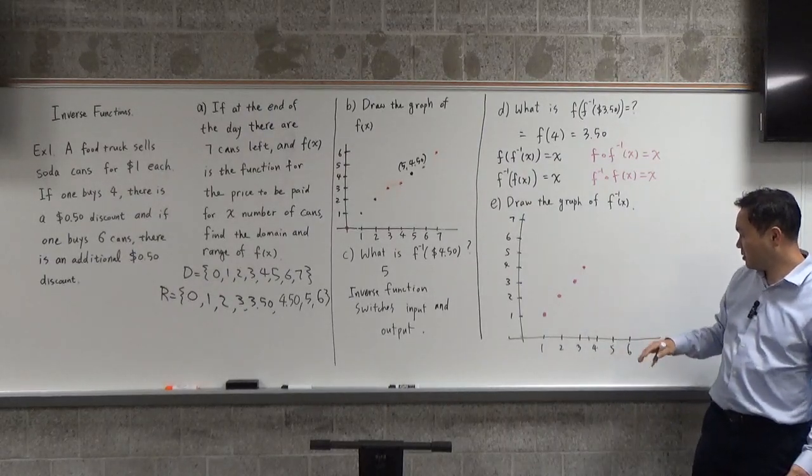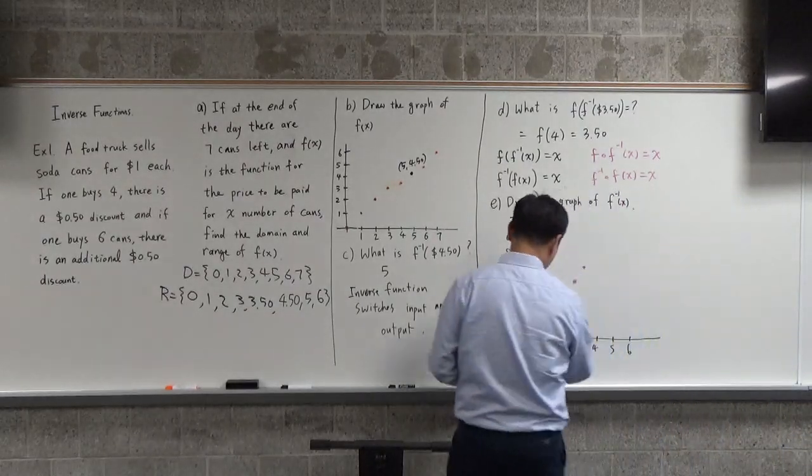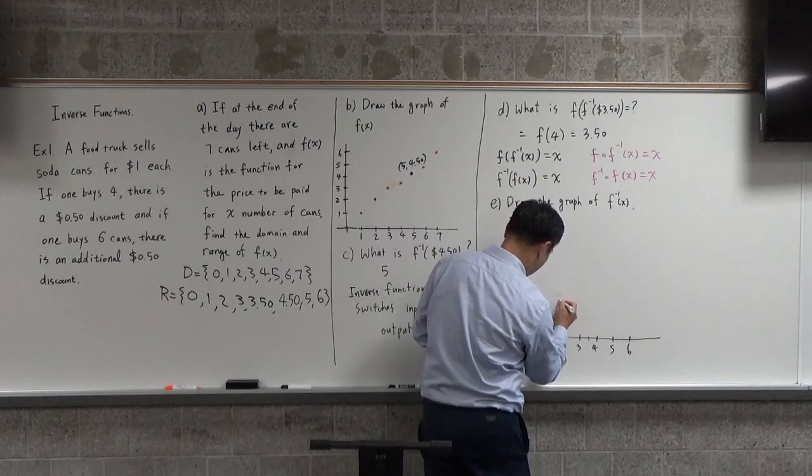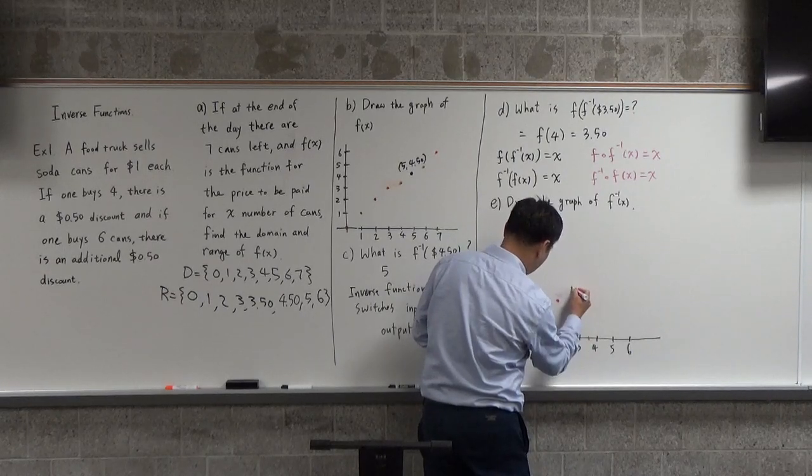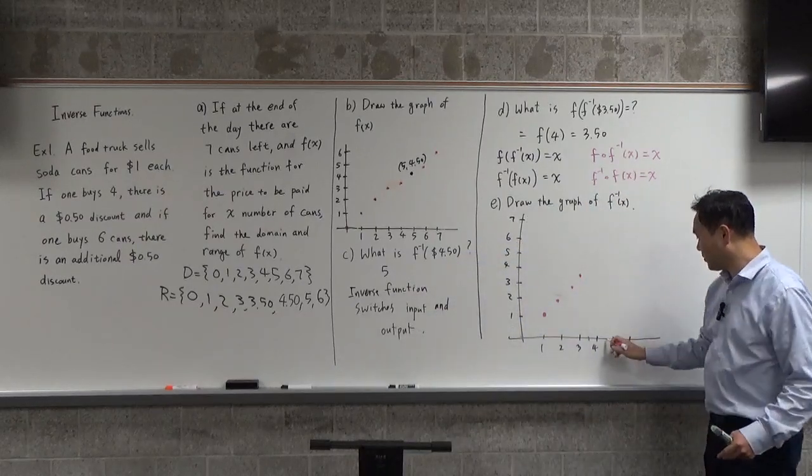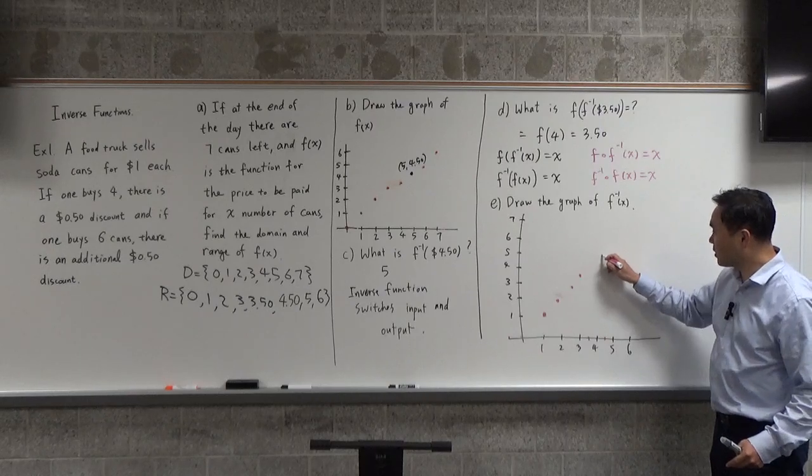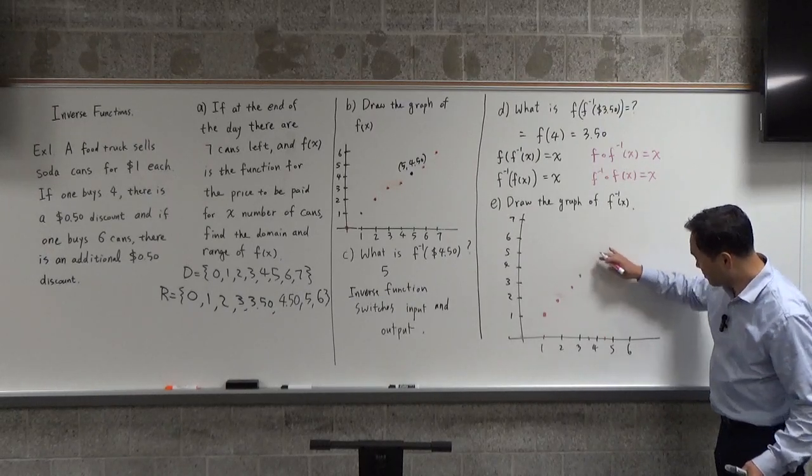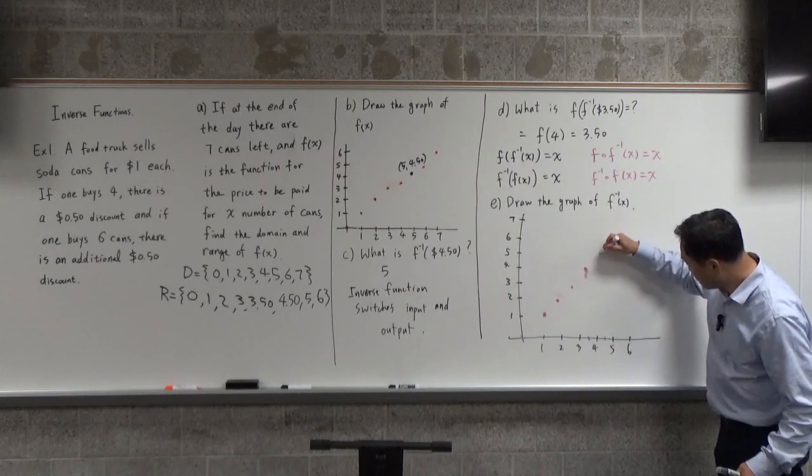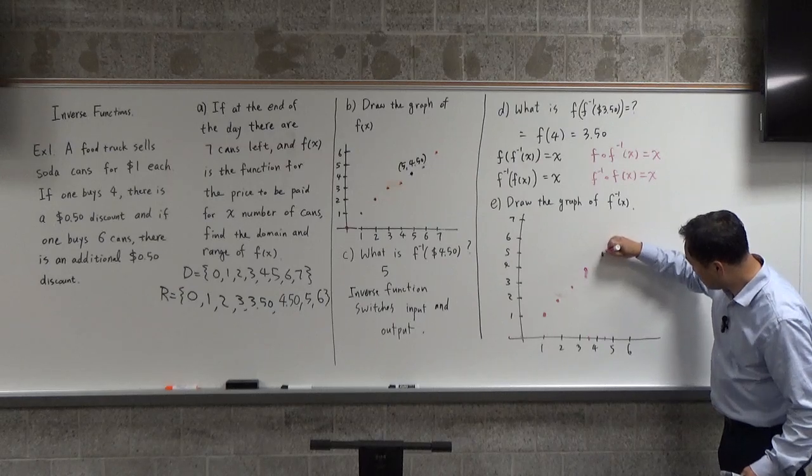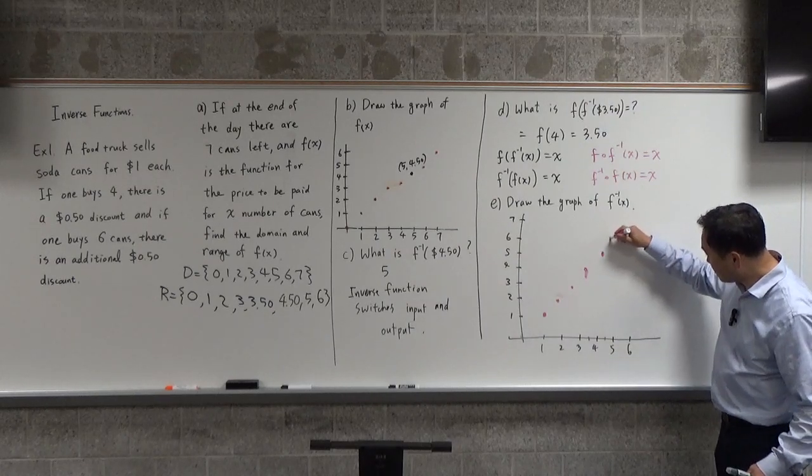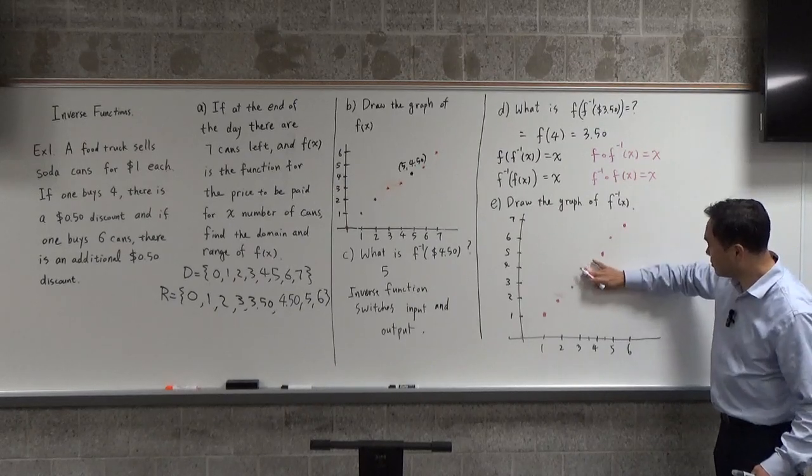I'm viewing it from the side, so it's hard to draw correctly. Then, instead of 5, you have 4.5 on the x-axis, corresponding to 5 cans on the y-axis. Then $5 gives you 6 cans, and $6 gives you 7 cans. So that's the graph of F inverse.